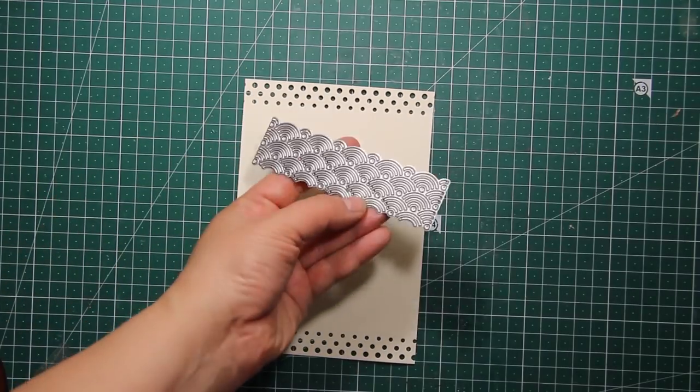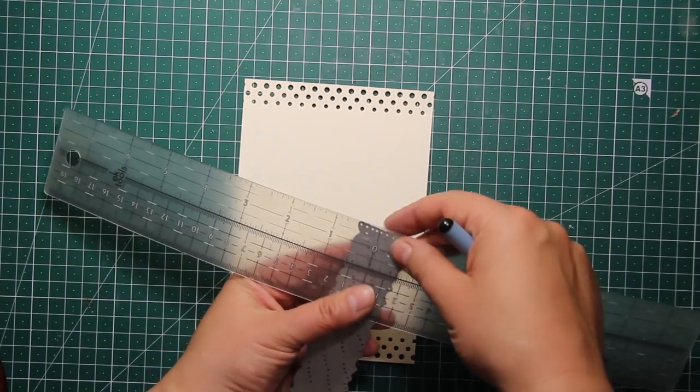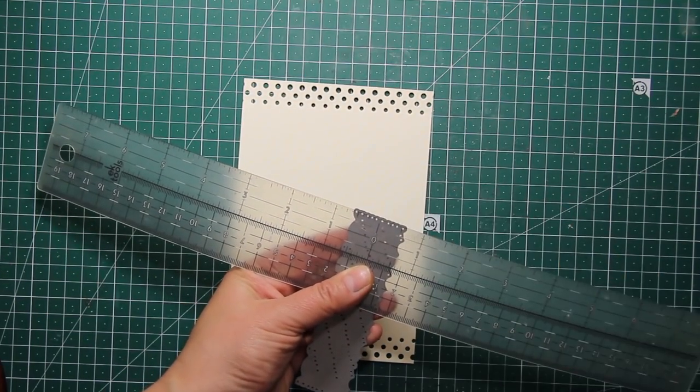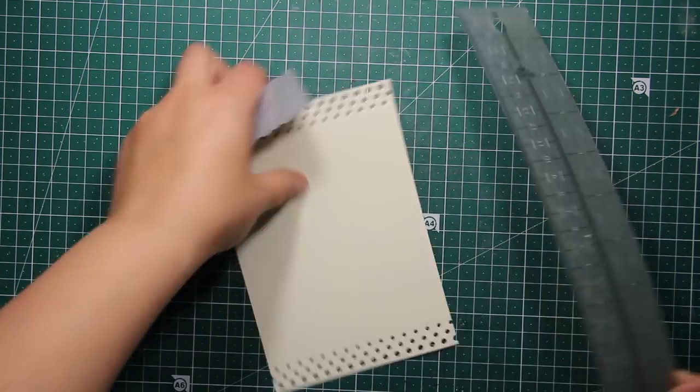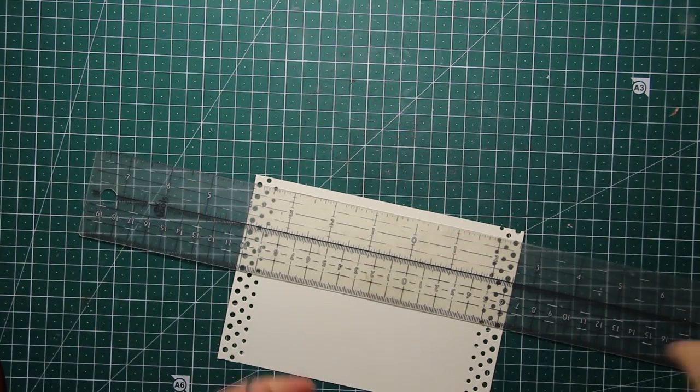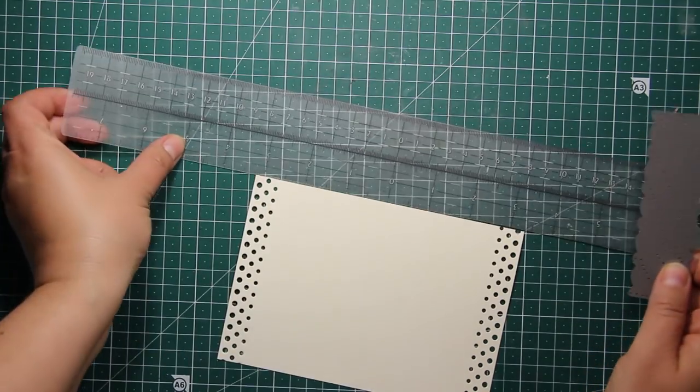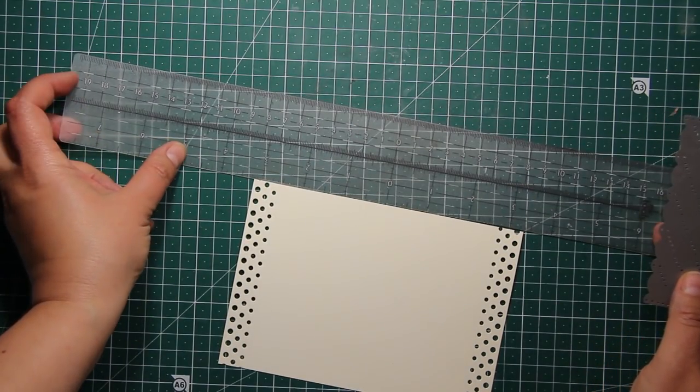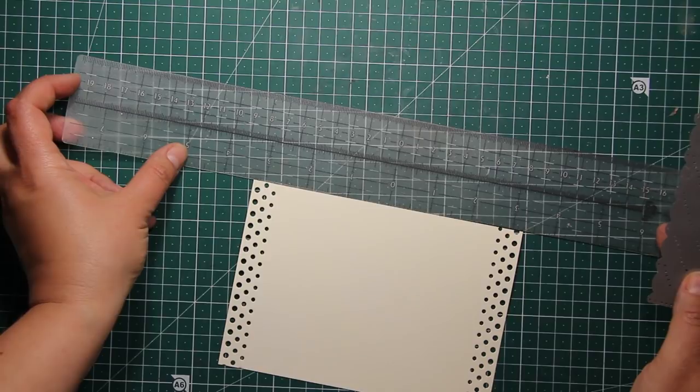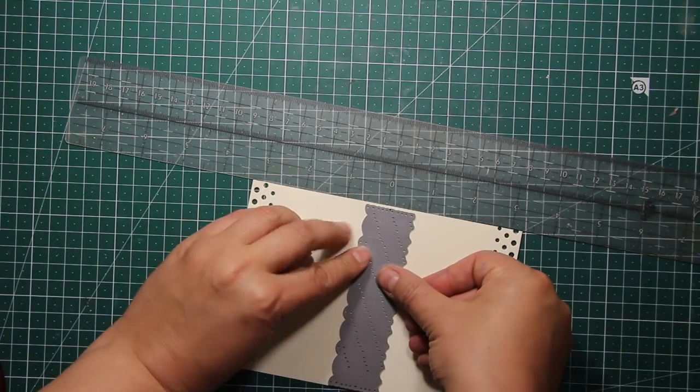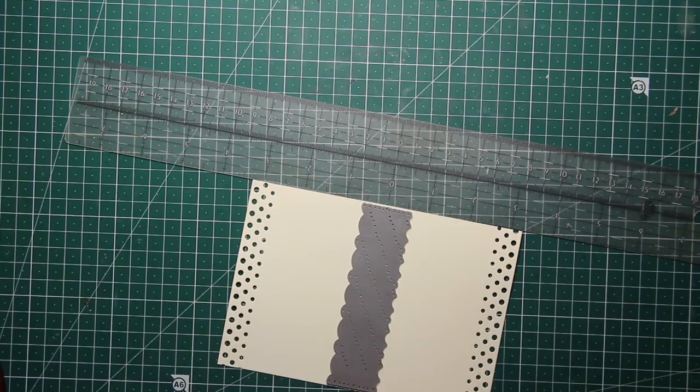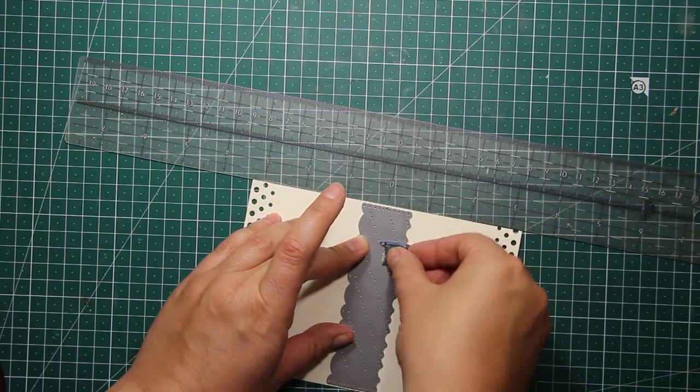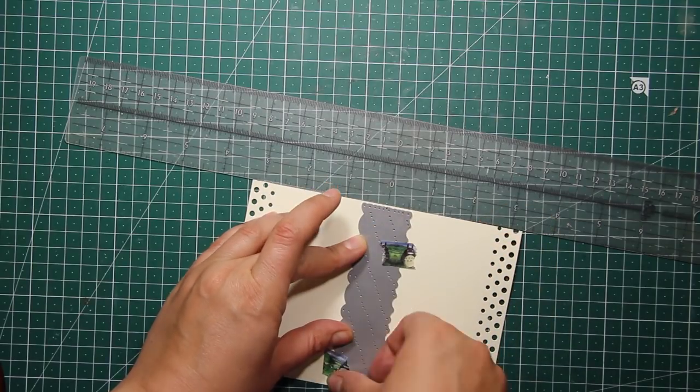By the way you can use whatever dies you have. It can even be strips of patterned paper or stamps. Now I'm going to die cut another border pattern. I'm actually making a mark on the die itself as well as on the panel just to center it really well. Then again I'm using washi tape to secure it in the center and then I'm sending it through the machine.